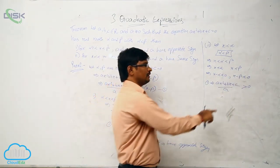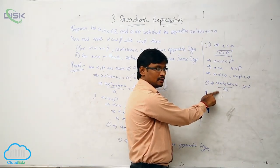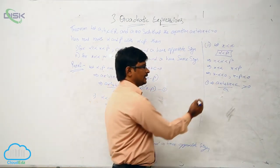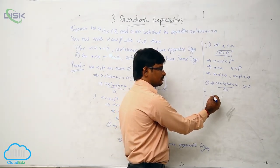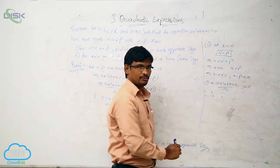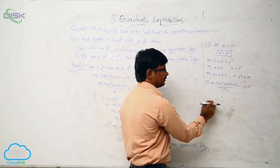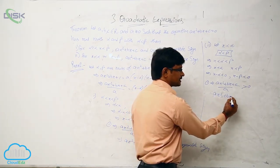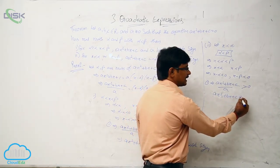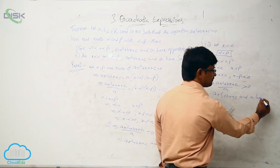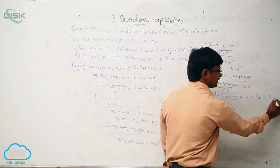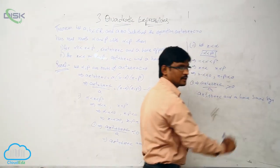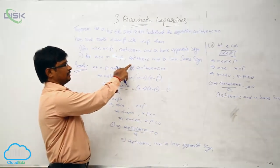When a fraction is greater than 0, both numerator and denominator have the same sign — negative over negative or positive over positive. Therefore, ax² + bx + c and a have the same sign. This is the first sub-case.